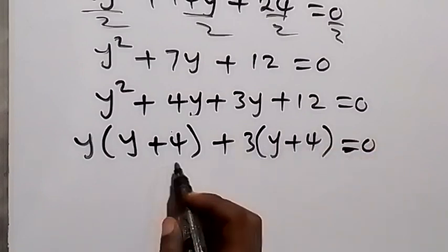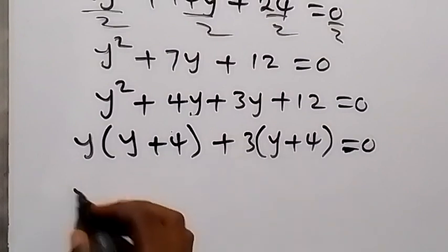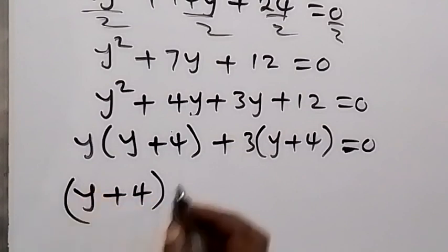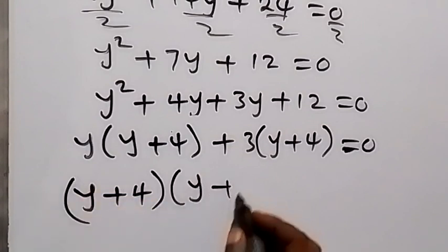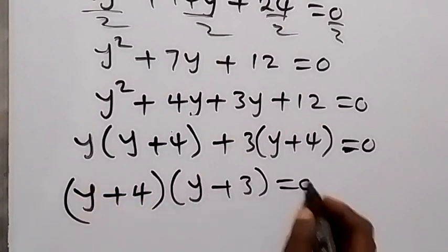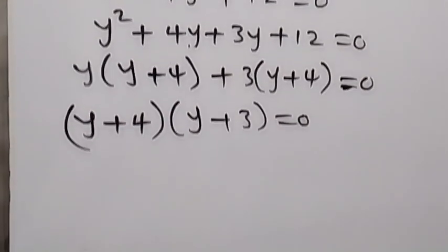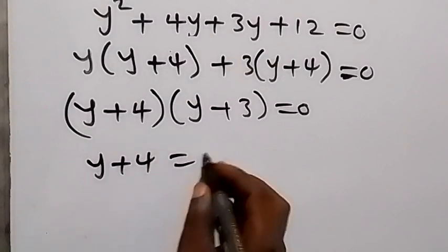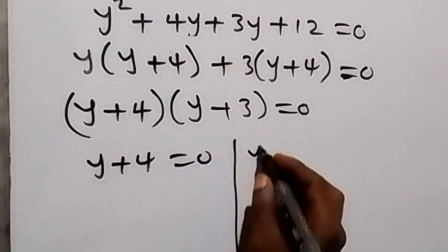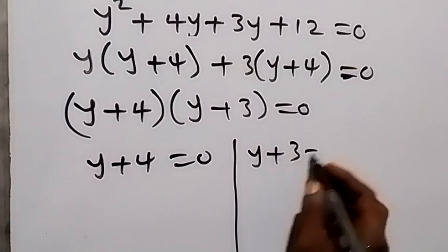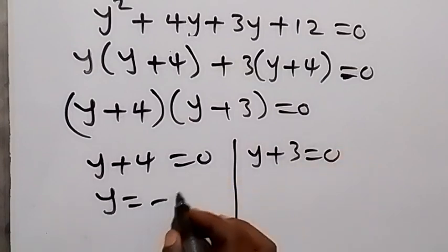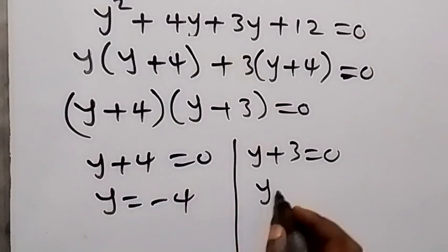which equals zero. Then y plus 4, y plus 4, we take one out as y plus 4, then multiply by y plus 3 equals zero. So we have y plus 4 equals zero, or we have y plus 3 equals zero. From here, y equals minus 4, and from here y equals minus 3.